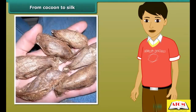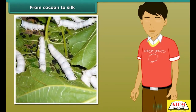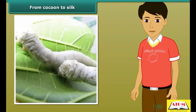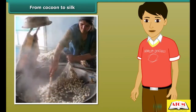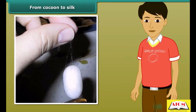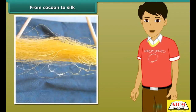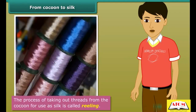Silk is processed from cocoons once the silk worms spin a protective cocoon around themselves. These cocoons are boiled in hot water to separate the silk fiber from the worms. Each cocoon is made of one single silk thread. The trick is to locate one end of the thread, and then it is easy to unwind the thread from the cocoon. The process of taking out threads from the cocoon for use as silk is called reeling.